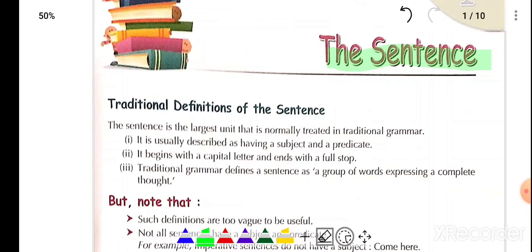So what is a sentence? First of all, we will discuss that A, V, C — these are called letters. Then, letters combine to form words. For example: boy, girl, mother, father, school, college — these kinds of things. Then words combine to form what is called a sentence. So we will discuss the sentence today.